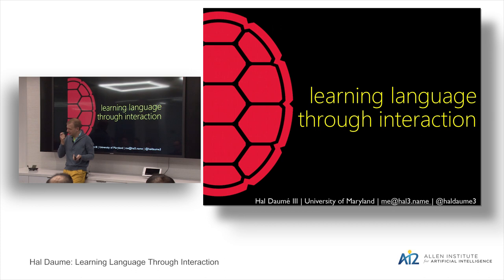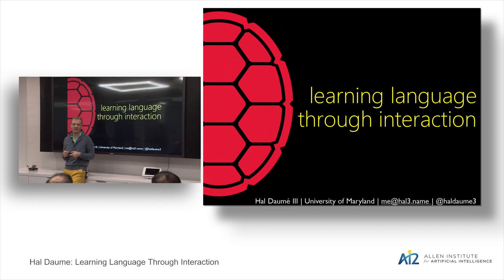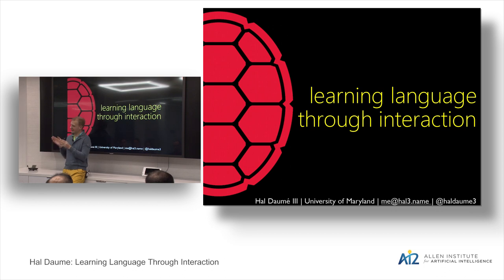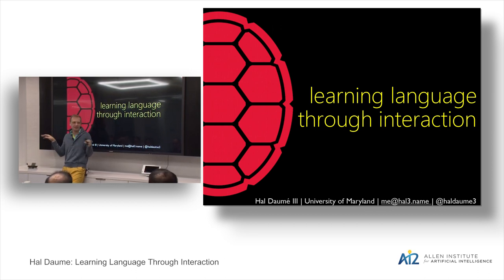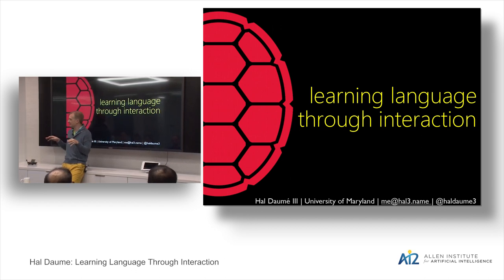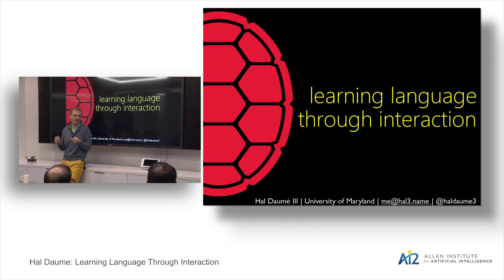I'm going to talk about a bunch of stuff we've done related to learning language through interaction. The high-level view is that NLP and AI more generally has had a lot of success over the past 20 years by doing machine learning, in particular supervised learning. This works really well when you can get bunches of labeled data, which you can do for narrow tasks and domains in one or a few languages. But if we want broad coverage language systems across a large number of tasks, domains, and languages, I don't think it's feasible to get all the labeled data we could possibly need.